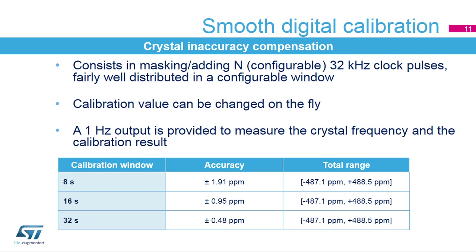The calibration value can be changed on the fly depending on detected temperature changes. A 1 Hz calibration output signal is provided to measure the crystal frequency before and after applying the calibration value. The calibration window size is configurable between 8, 16 and 32 seconds. For a 32-second calibration window, the accuracy is plus or minus 0.48 ppm, and the total correction range is from minus 487 to plus 488 ppm. The accuracy resolution scales with the calibration window size. Final accuracy will depend on crystal parameter precision, temperature detection precision, and how often the software calibration procedure is launched. In order to reach the precision of the calibration window, the measurement window must be a multiple of the calibration window.